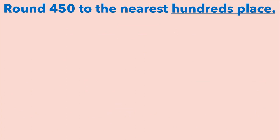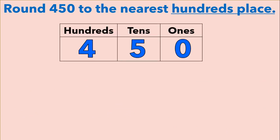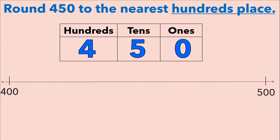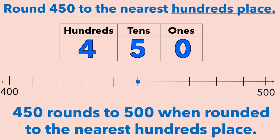Now let's round four hundred fifty to the nearest hundreds place. We start with our place value chart and insert our digits. We can see that in four hundred fifty there are four hundreds, so we're going to start our number line at four hundreds. One more hundred than four hundreds is five hundreds. Now let's break our number line up into ten equal parts. Each part is going to represent ten again, so we can plot four hundred fifty. Four hundred fifty is directly in the middle between four hundred and five hundred. But because there are five tens, when it's five or more, we're going to round up. So four hundred fifty rounds to five hundred when rounded to the nearest hundreds place.